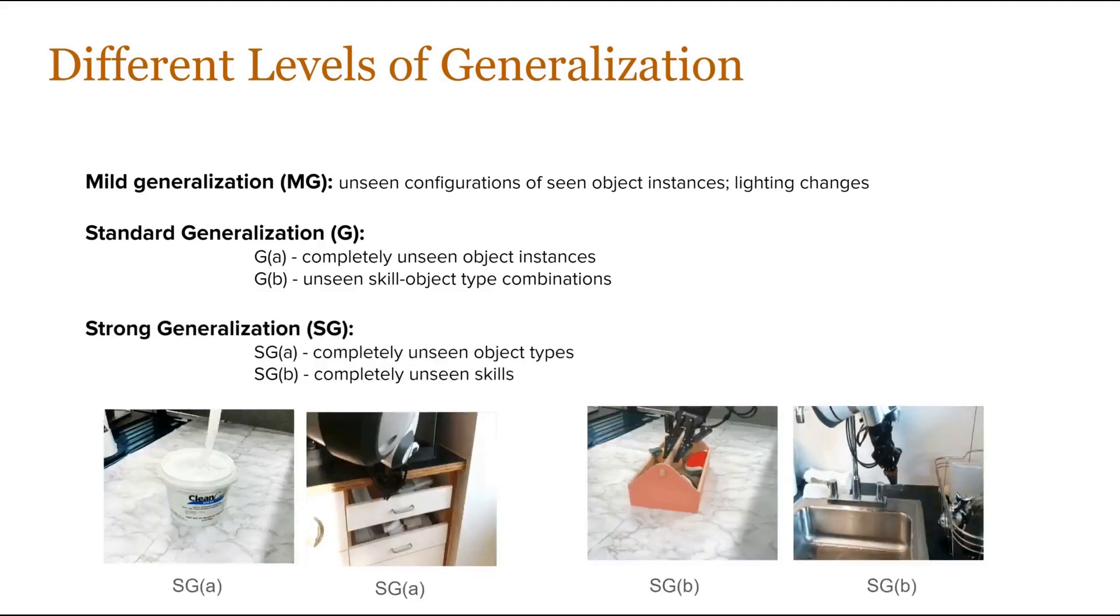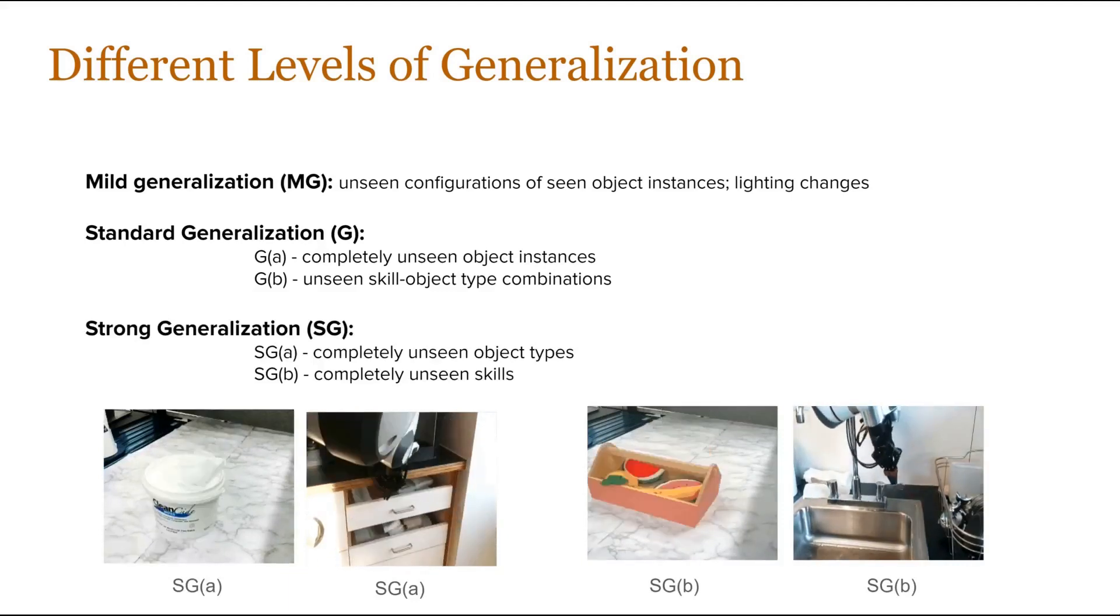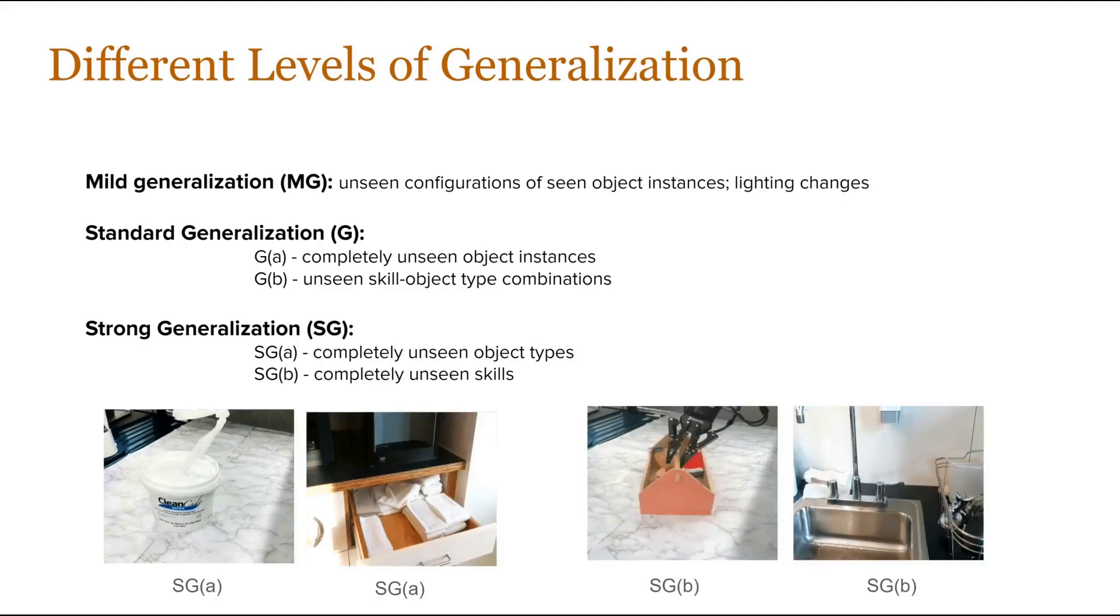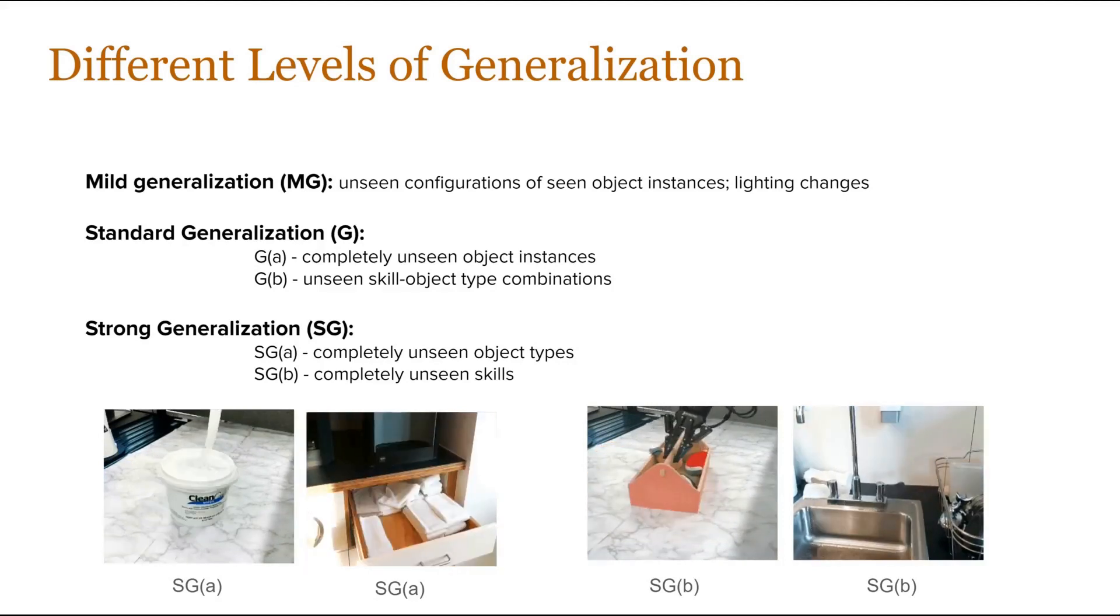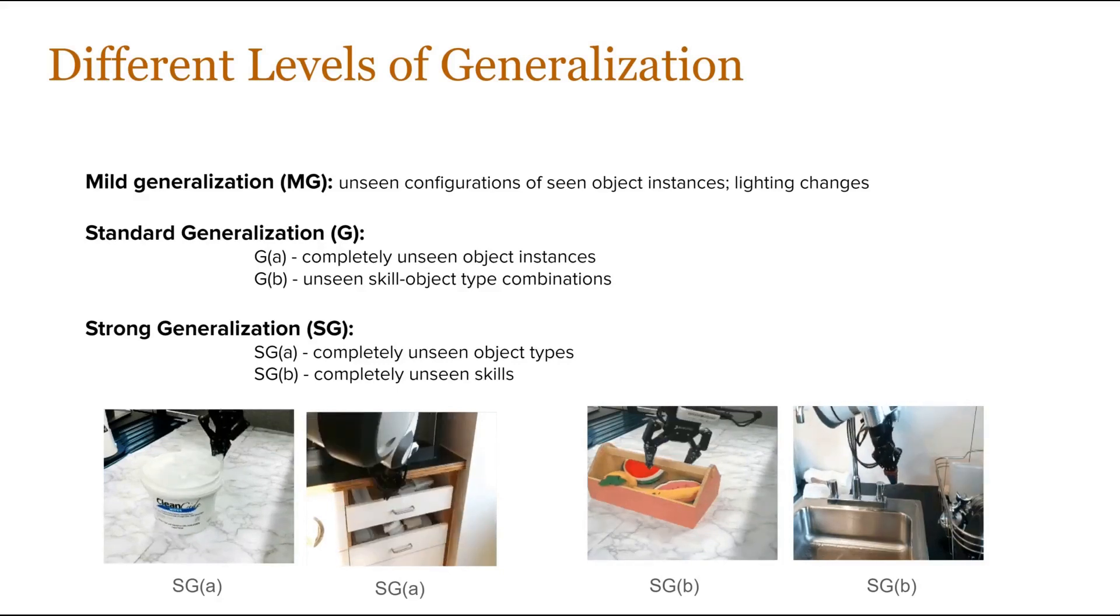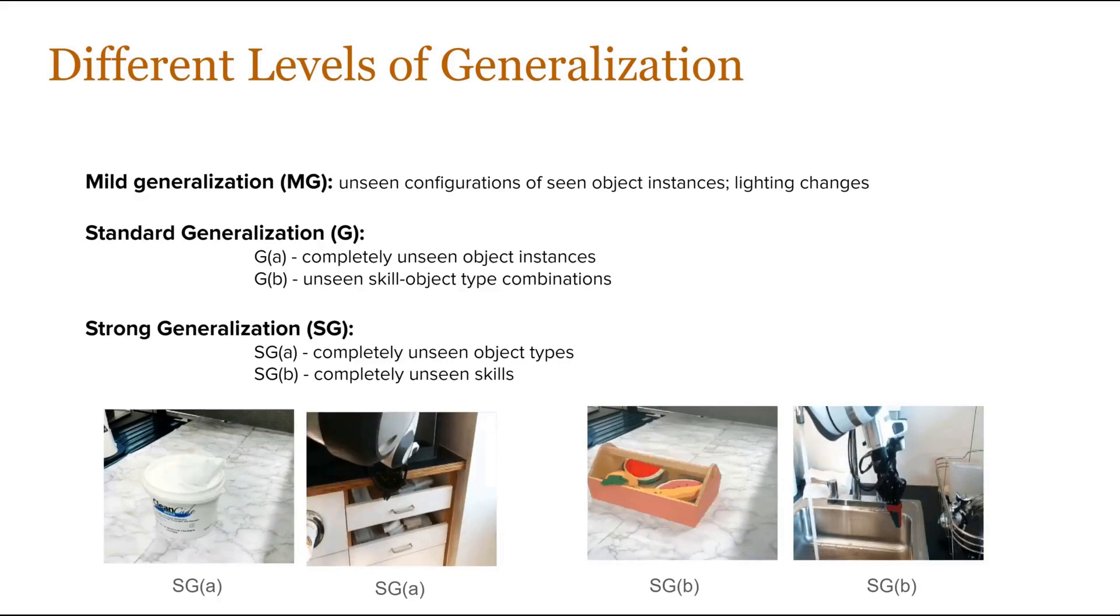For strong generalization, we either have a completely unseen object type or a completely unseen skill. For example, we have never seen a drawer in the wild being pushed, which we are generalizing to, and we haven't seen the skills like reorientation and turning, which we are generalizing to.